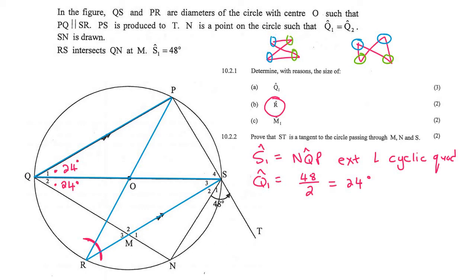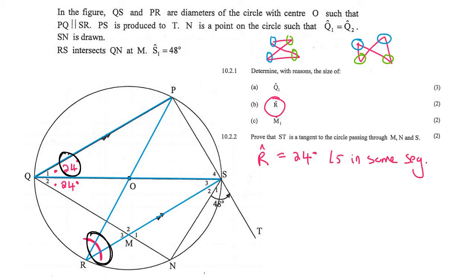So if we look at our bow tie, we would be able to see that these two should be the same, and so angle R must be 24 degrees. Now of course the reason is not bow tie, the reason is angles in the same segment.